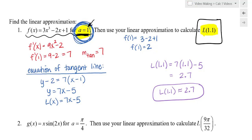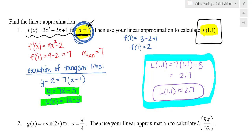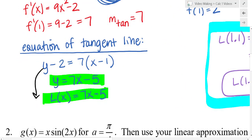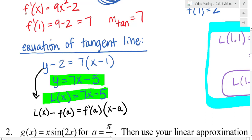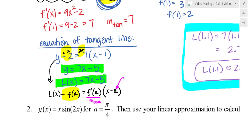Most of what we just did wasn't really new information — the key skill is writing the equation of the tangent line. The formal linear approximation formula L(x) = f(a) + f′(a)(x − a) is the same as what we derived: the y value from the point, plus f′(a) as the slope, times (x − a). They're just putting the linear approximation notation into the tangent line equation.